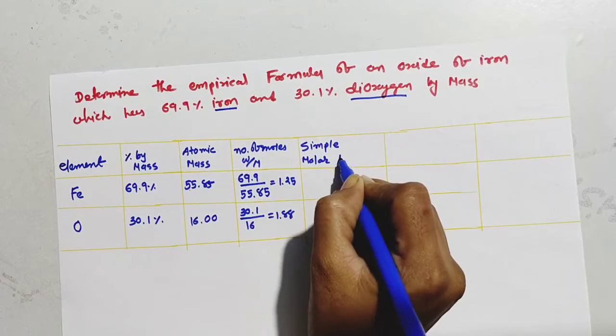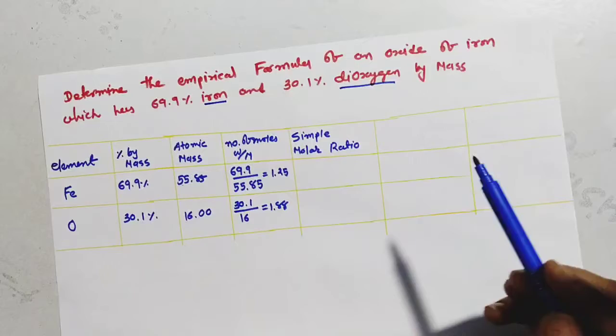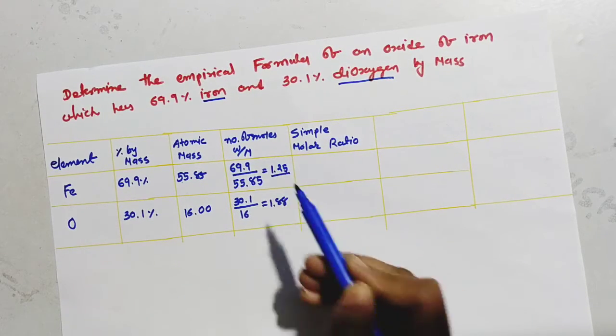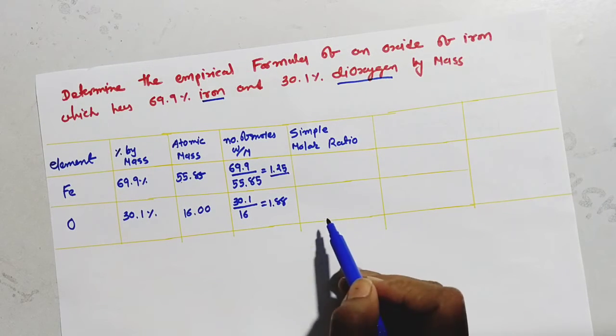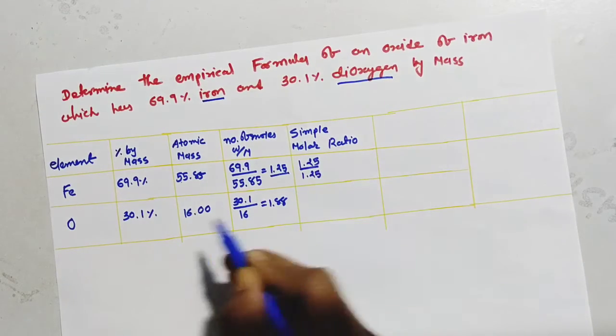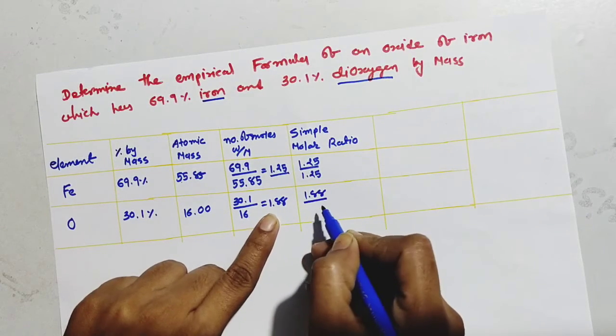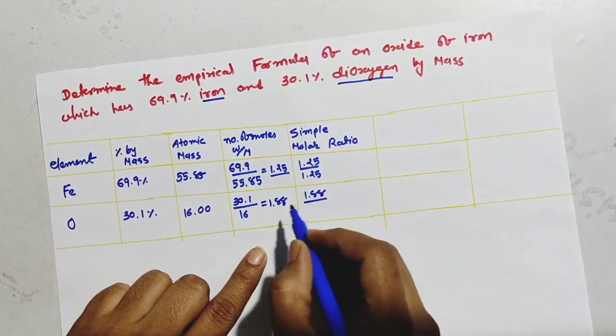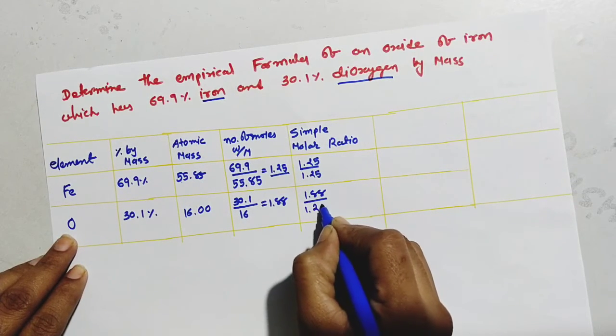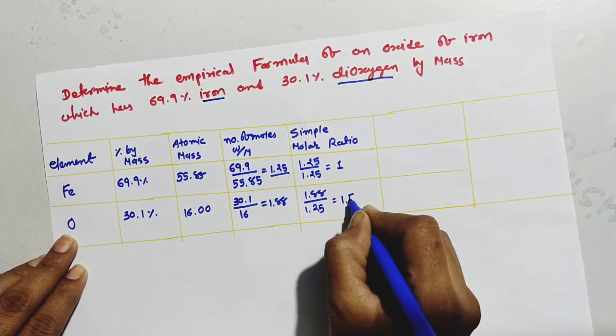So, how to find simple molar ratio? See students, focus on these two digits. Which is our least digit? This 1.25 is our least digit. So, we have to divide 1.25 divided by 1.25. And here, this oxygen has 1.88 mole. But, which is our least digit? 1.25. So, we have to divide also this oxygen's mole by 1.25. And now, we will get here answer is 1 and here, 1.5.